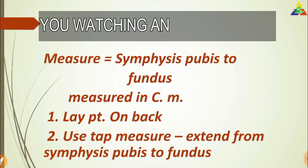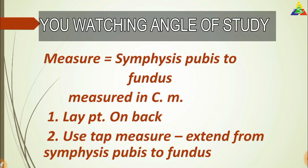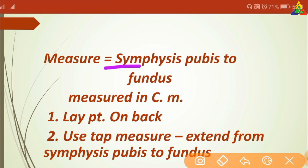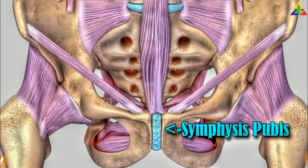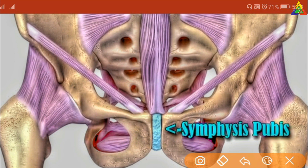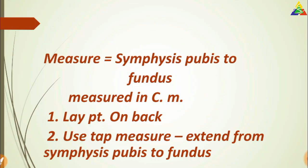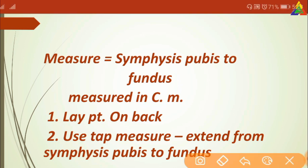Now, how do we measure? Remember two important landmarks: symphysis pubis and the fundus of the uterus. The symphysis pubis is the joint in between the two pubic bones, and the fundus is the top part of the uterus.